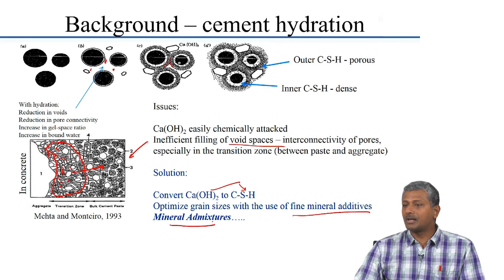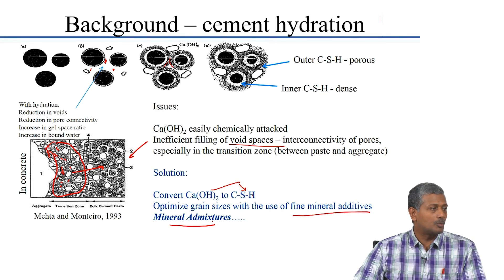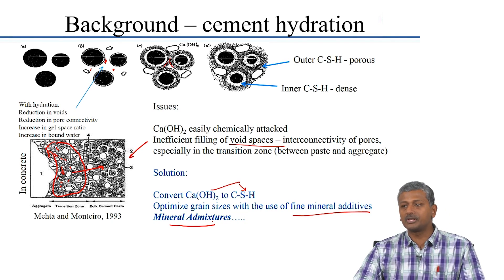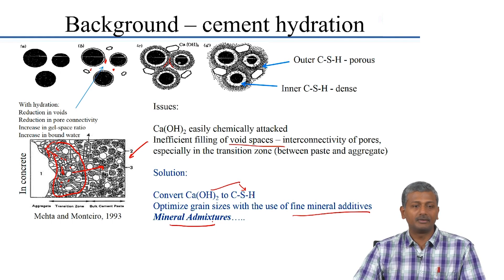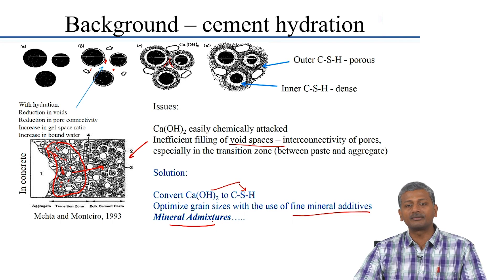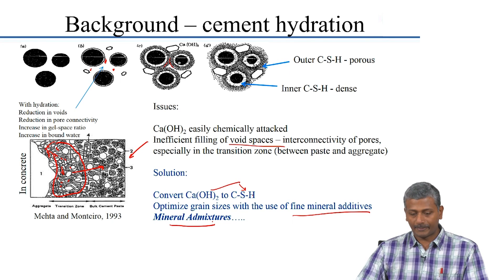We already talked about mineral admixtures to some extent when we discussed special cements and blended cements — Portland pozzolan cement, Portland slag cement — where slag and fly ash are used as blending materials that have a pozzolanic reaction. They react with the calcium hydroxide in the system to convert it to CSH, and because of the fine particle sizes, they optimize the particle size distribution of the cementitious materials, leading to more efficient filling of the pore space.